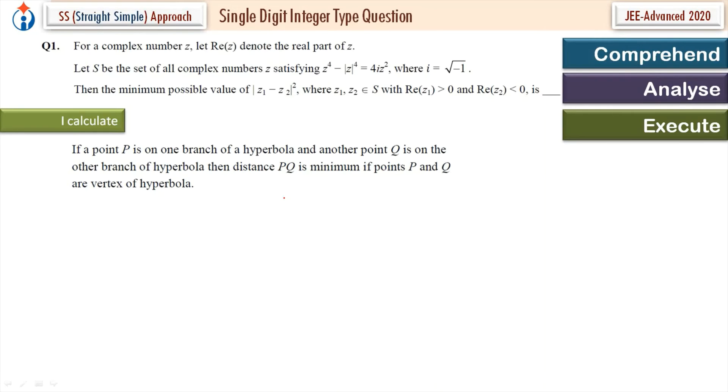Now I also know that if your point P is on one branch of your hyperbola and other point Q is on the other branch of the hyperbola, then distance PQ is minimum if points P and Q are vertices of hyperbola. Now XY is equal to 1 is symmetric about line Y equal to X, its transverse axis of the hyperbola. So points of intersection of hyperbola and its transverse axis are vertices of hyperbola.